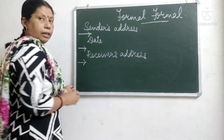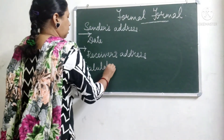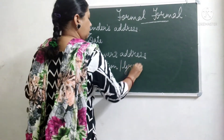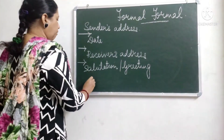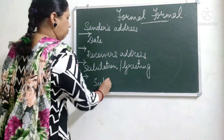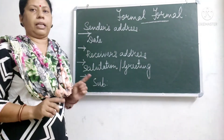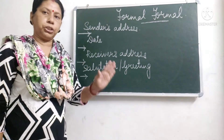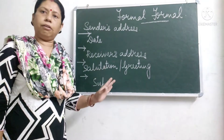Then leave a line. You have the salutation, or you can say your greeting. Then you leave a line and write the subject, which is very important in formal letter writing. The subject should be short and to the point — exactly what you want to convey in the letter.